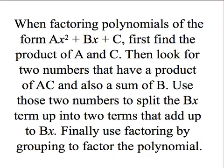When factoring polynomials of the form ax squared plus bx plus c, first find the product of a and c. Then look for two numbers that have a product of a times c and also a sum of b. Use those two numbers to split the middle term up into two terms that add up to the middle term. Finally, use factoring by grouping to factor the polynomial.